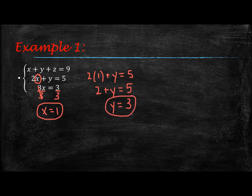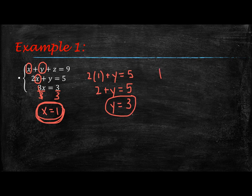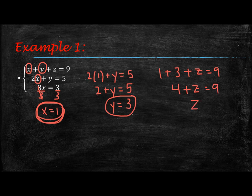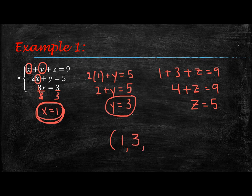So now we're going to take this y value of 3 and put it in the top equation, but we're also going to take the x value of 1 and put it into the top equation as well. So then we're going to have 1 plus 3 plus z equals 9. 1 plus 3 is 4, 4 plus z equals 9, so therefore z has to equal 5. And once you get your solutions, you can write it as an ordered triple in alphabetical order: x is 1, y is 3, and z is 5.